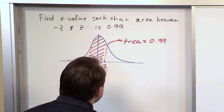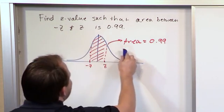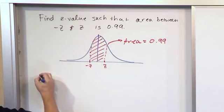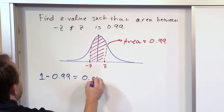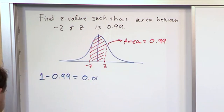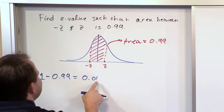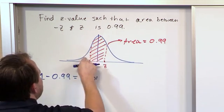So the way you really want to tackle this is you want to recall that the area under the entire curve is 1. So if I take 1 minus 0.99, then I get a number 0.01. What does this represent? 0.01 represents the area in the tails if you add them together.